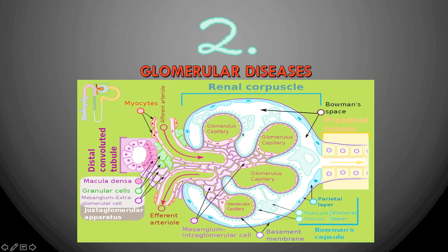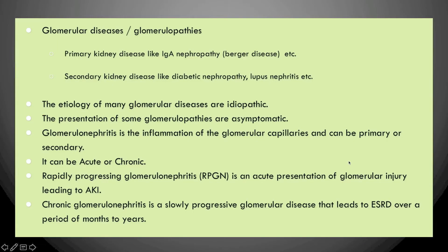Basic filtration takes place in the glomerulus. Blood enters and filters through specialized glomerular capillaries that have pores, allowing waste material to pass according to size into Bowman's capsule and then into the proximal convoluted tubule. Glomerular diseases are also called glomerulopathies, and these can result from primary kidney disease — for example IgA nephropathy, also called Berger disease.